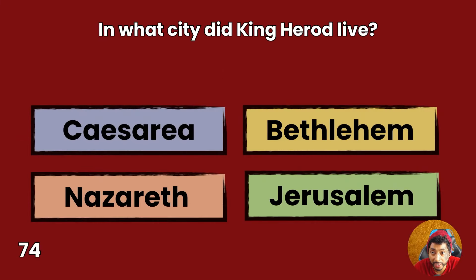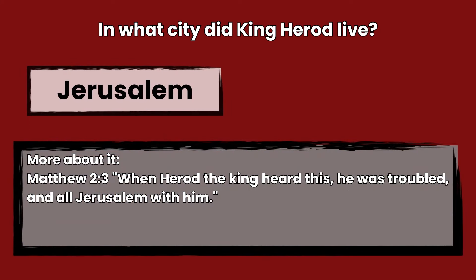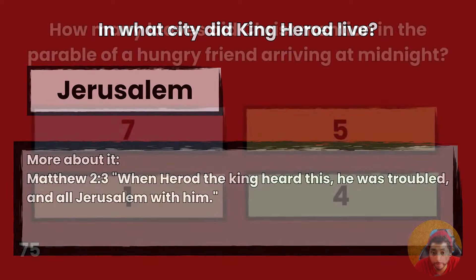Question 74: In what city did King Herod live? Caesarea, Bethlehem, Nazareth, or Jerusalem? Answer: Jerusalem. Matthew 2:3 — When Herod the king heard this, he was troubled, and all Jerusalem with him.